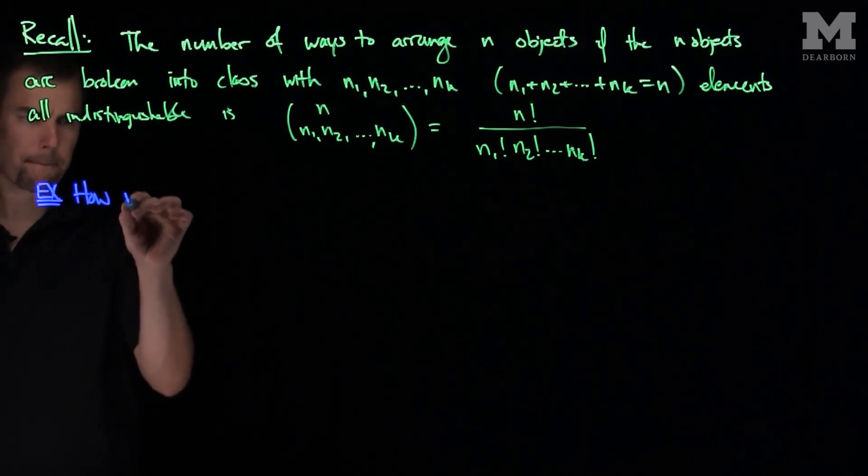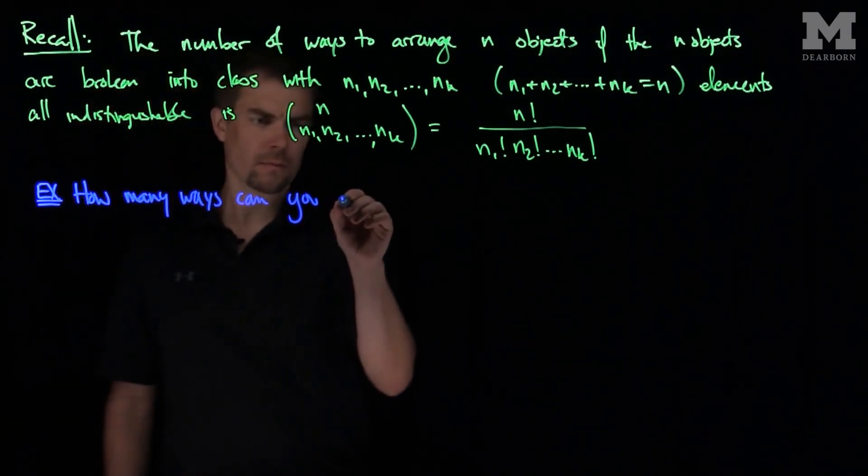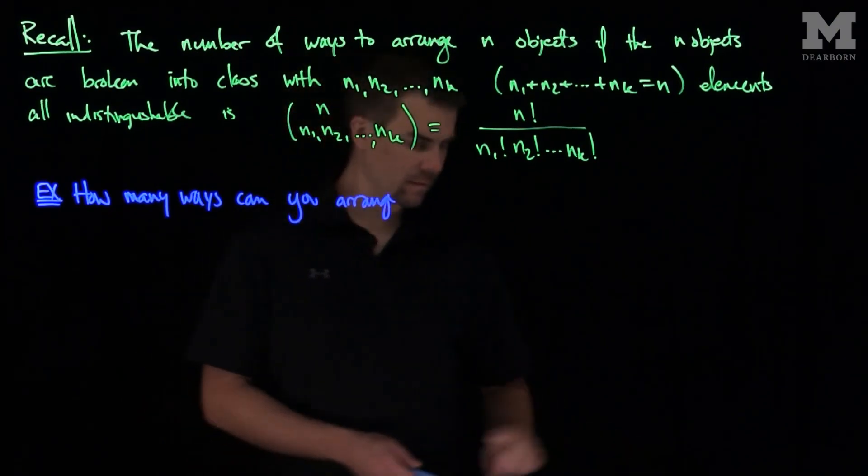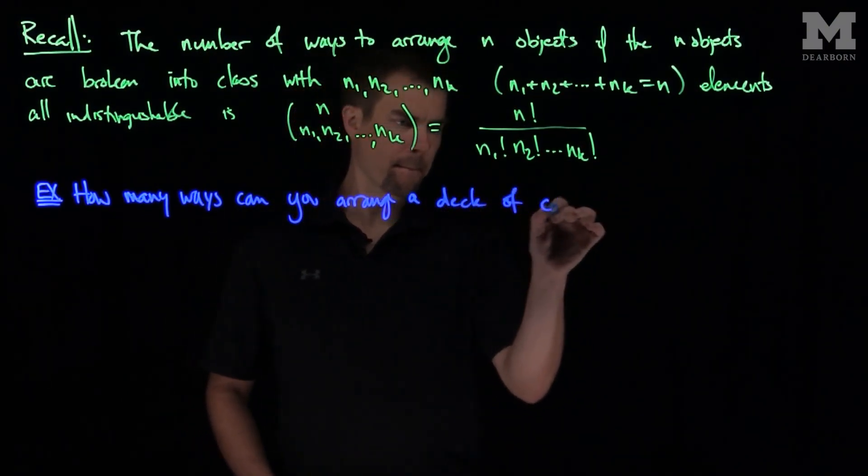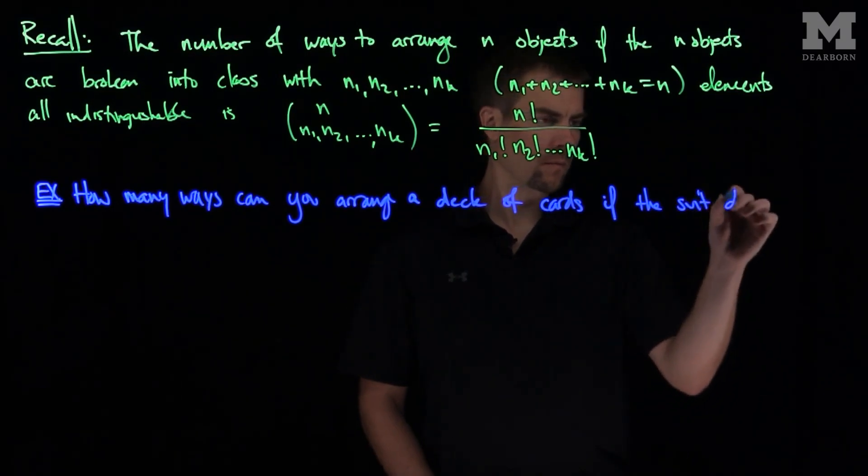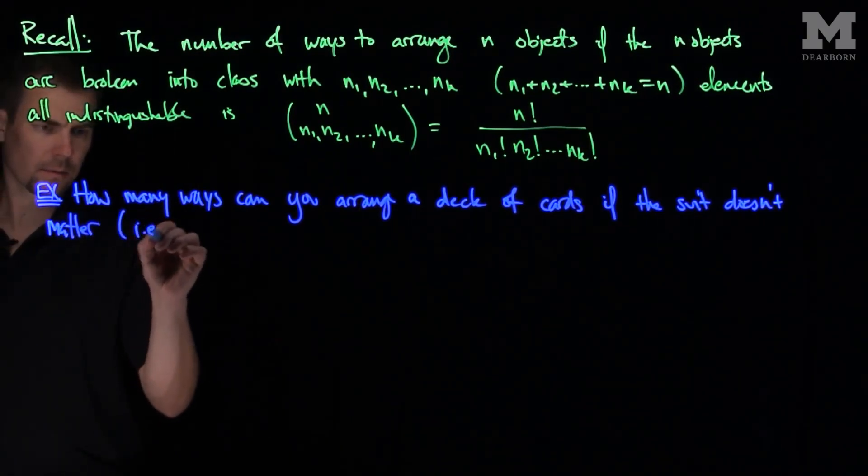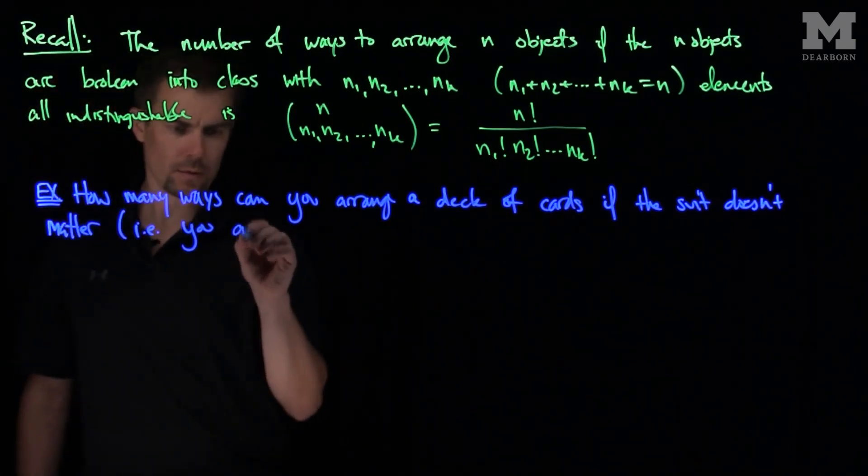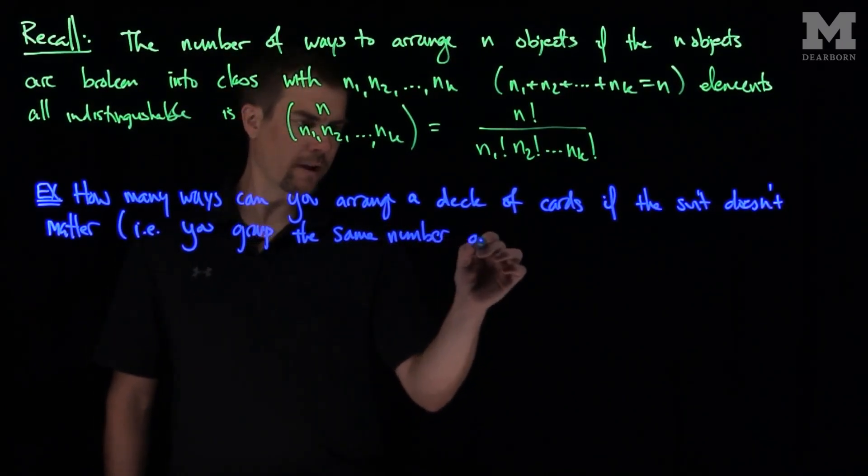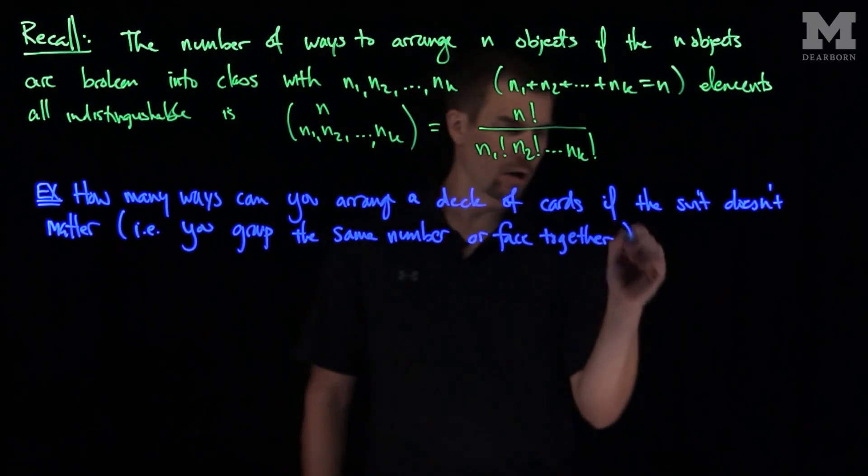How many ways can you arrange a deck of cards if the suit doesn't matter? That is, you group the same number or face together, so all the 3's are treated as an indistinguishable class, all the kings are an indistinguishable class, etc.